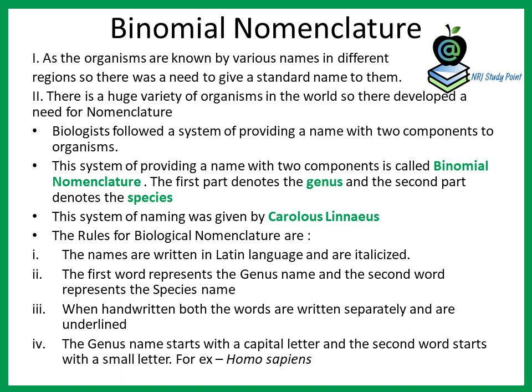Whenever a scientific name is written, the first component is the genus name which starts with a capital letter, and the second component is the species name which starts with a small letter. The two components should be underlined separately when written by hand, and when printed they must be italicized. For example, Homo sapiens — when printed it must be italicized, with the first letter of the genus name capitalized and the first letter of the species name in lowercase.